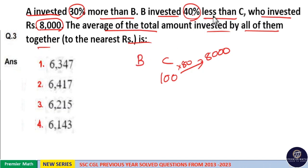Now B invested 40% less than C, means 40 less than 100 is 60. Now A invested 30% more than B. 10% of 60 is 6, so 30% is 6 into 3, which is 18. So 60 plus 18 is 78.